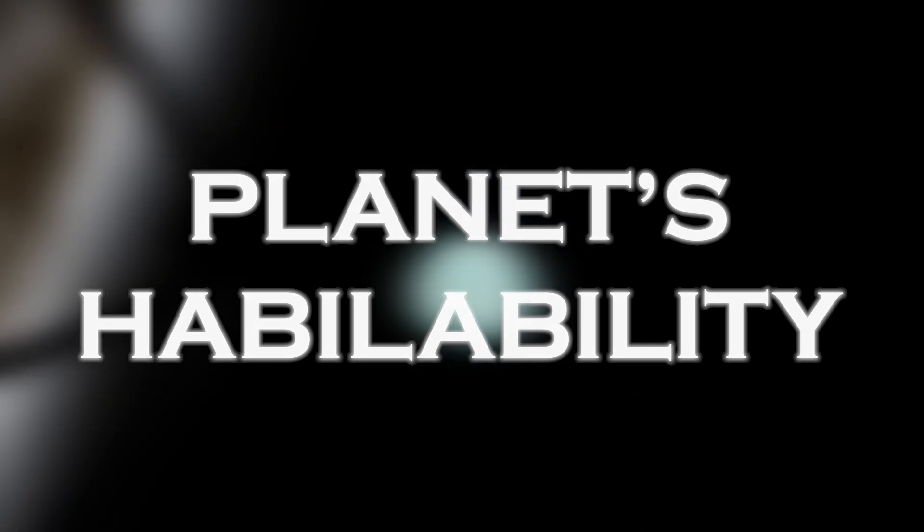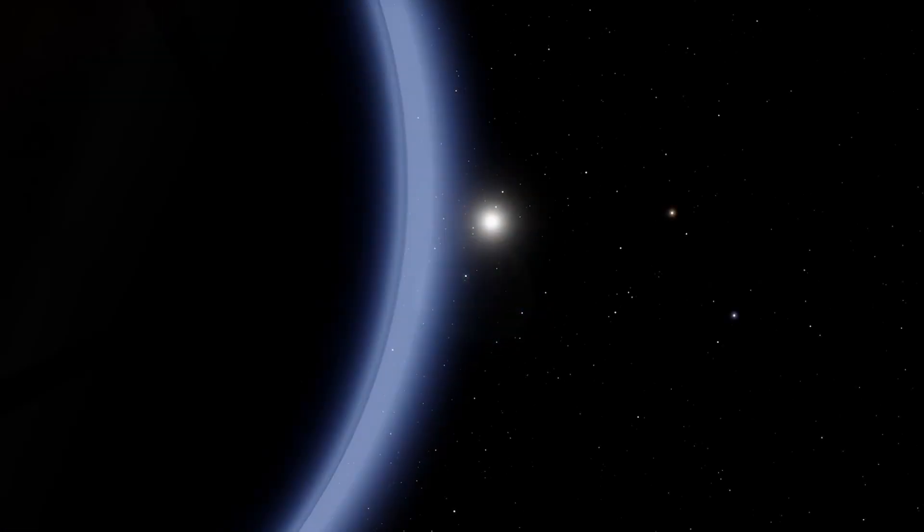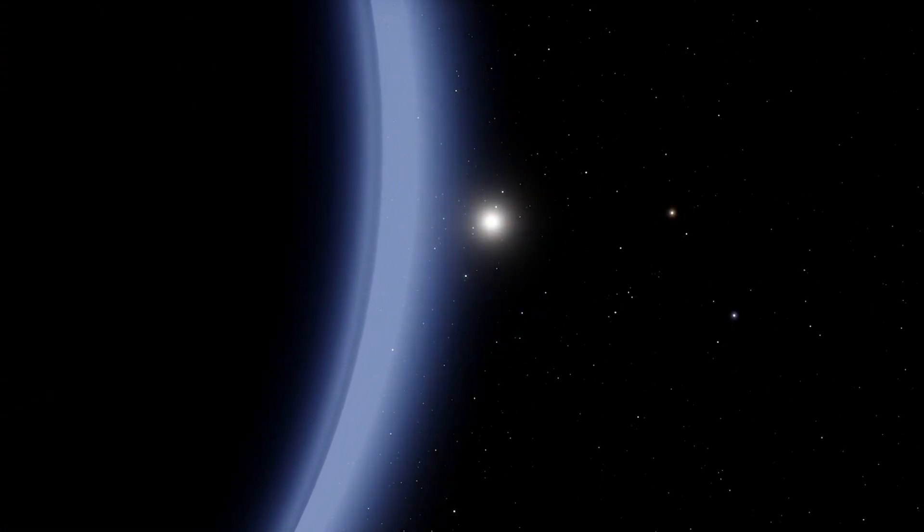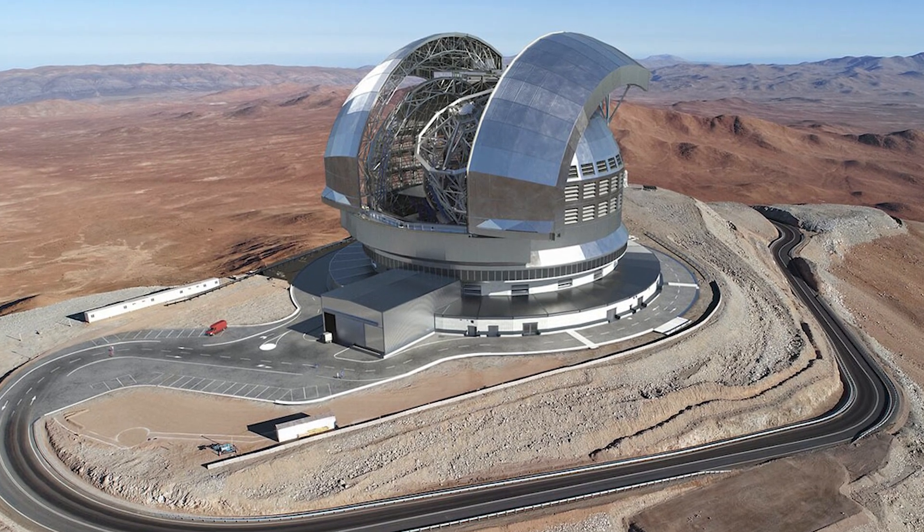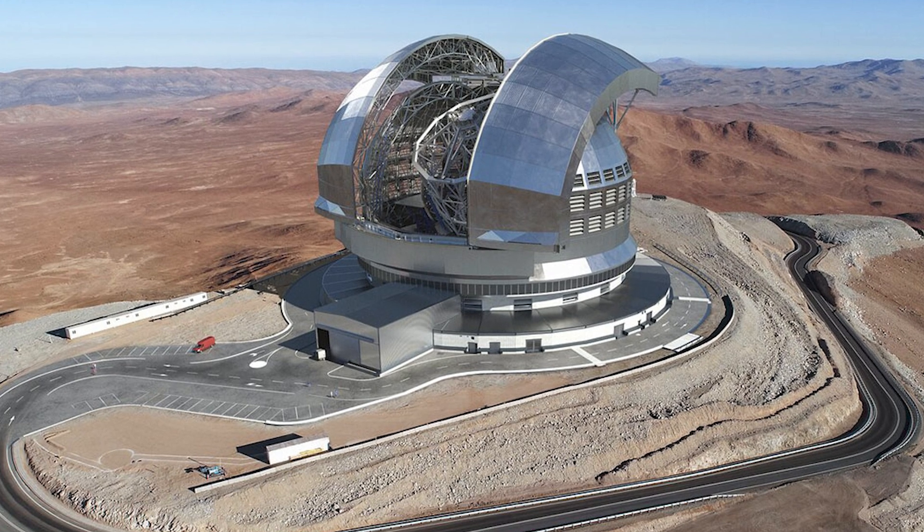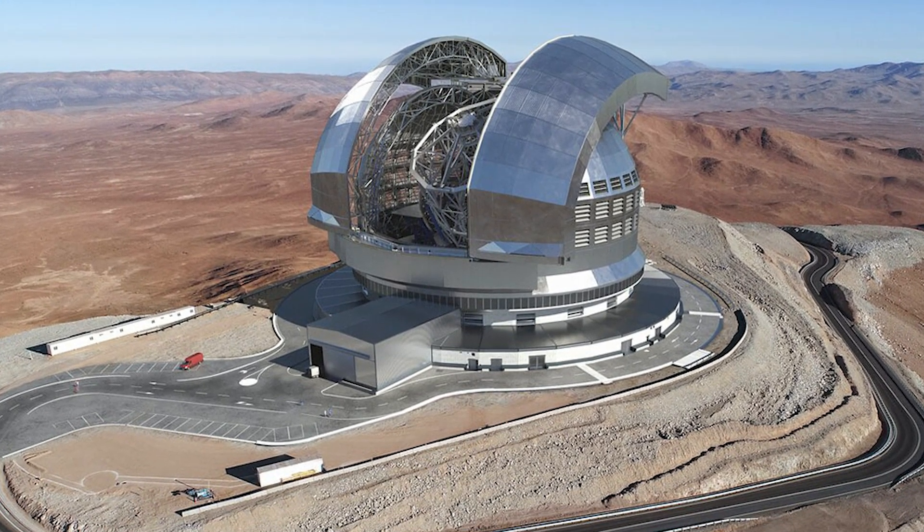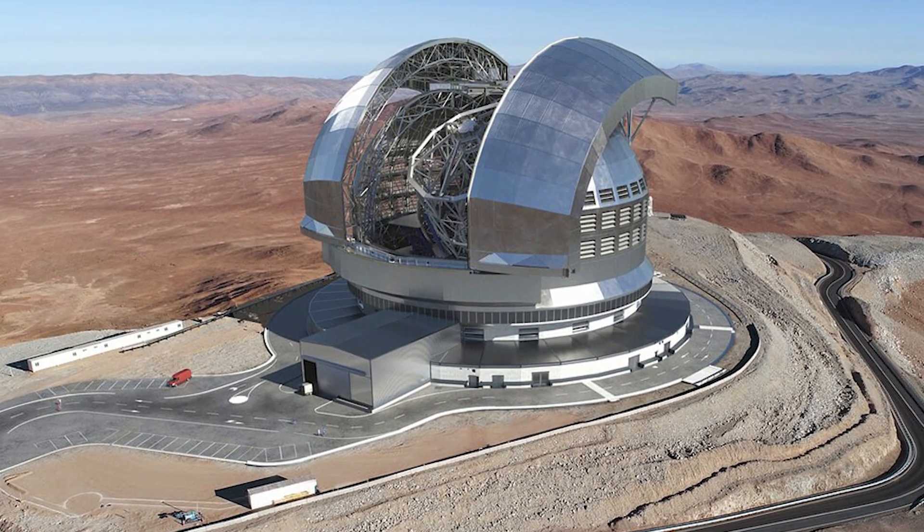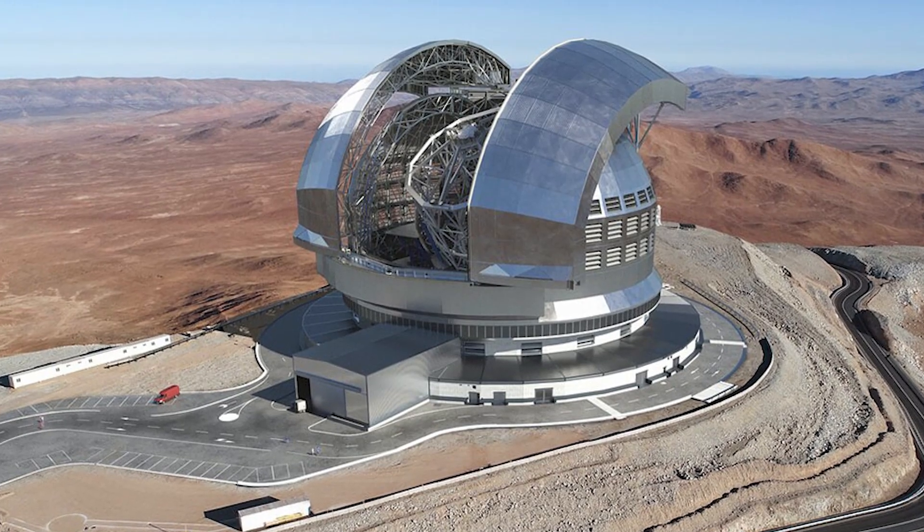It is important to keep in mind that the JWST cannot explore all potential habitable worlds, as it has limited capabilities and can only observe some of the exoplanets closest to Earth. Therefore, astronomers are turning to ground-based observatories such as the Extremely Large Telescope, the ELT, which is expected to become operational in 2028, and allow for a deeper investigation of the atmospheric structure of distant exoplanets.